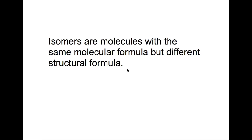Isomers can be part of the same or different homologous series. Today we're going to be looking at alkanes, alkenes, and cycloalkanes.